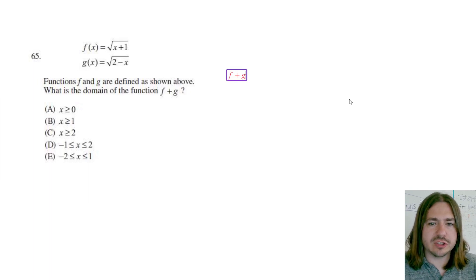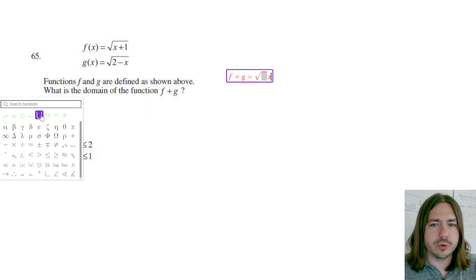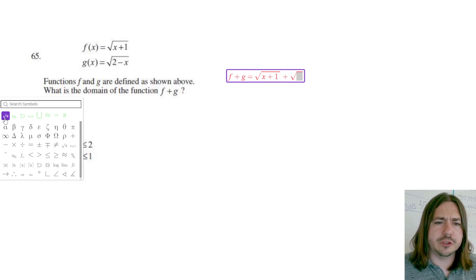So f plus g is just going to be the sum of these two functions. So it's going to be the square root of x plus 1 plus the square root of 2 minus x.